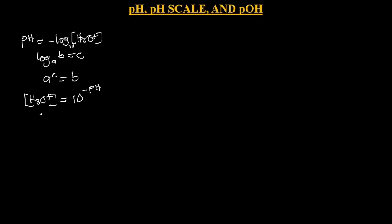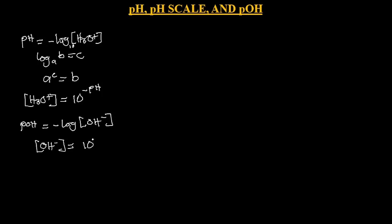because the logarithm here is expressed in base 10. The same thing goes for pOH. For pOH, we are considering the concentration of hydroxide, so pOH equals negative log of [OH−]. And the same way, [OH−] is equal to 10 exponent negative pOH.